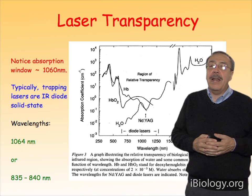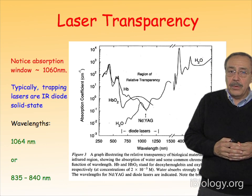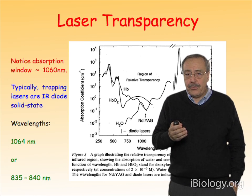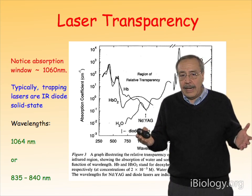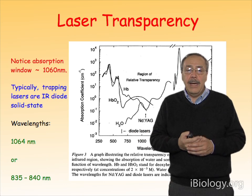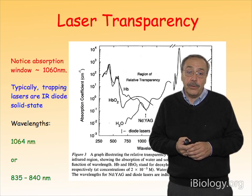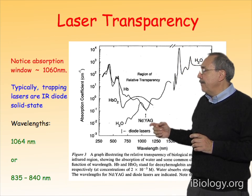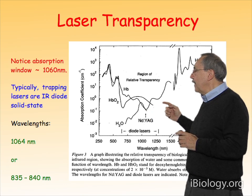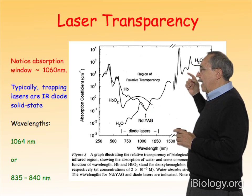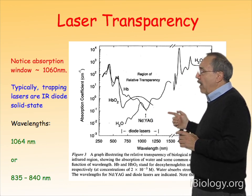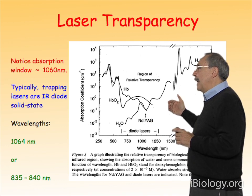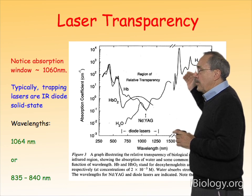What wavelengths of light can be used for laser trapping? What you see here is a spectrum showing the absorption of light by different materials. Most importantly, water, which is always present in biological applications. Water actually has an increasing absorption spectrum towards higher wavelengths, so if you go from the visible to the infrared, you have an increase in the absorption cross-section of water.